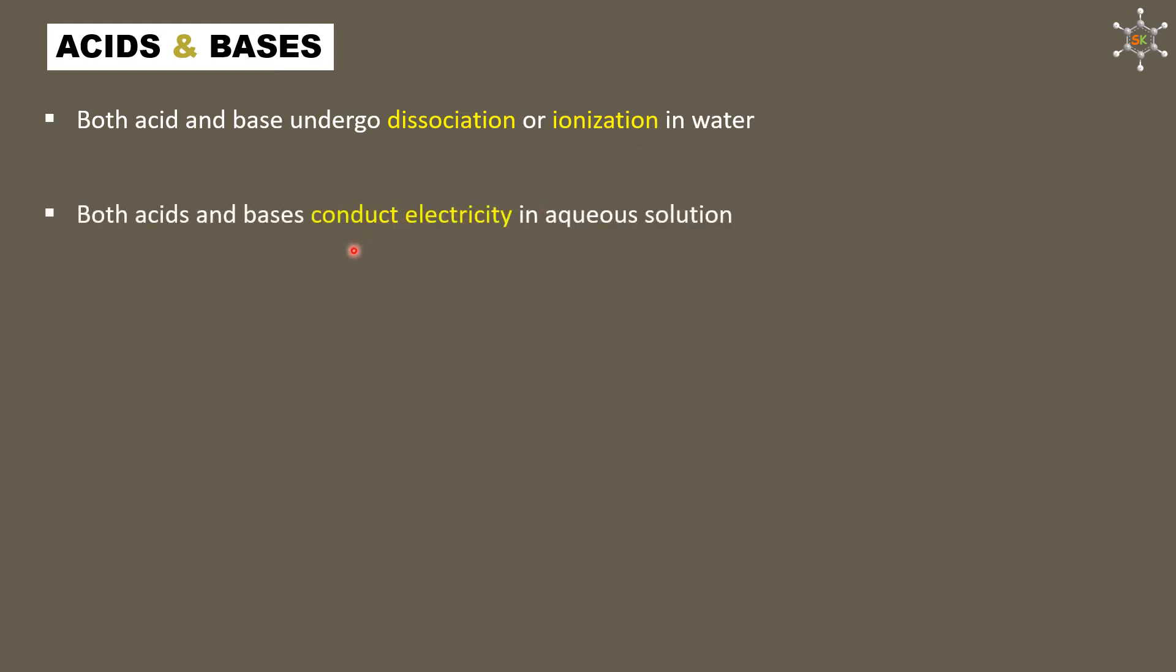Second common point: both acids and bases conduct electricity in aqueous solution. For a solution to conduct electricity, it should have ions in it. When acid or base is put into water, we know that they will undergo dissociation or ionization that results in the formation of ions. So, acidic solution and basic solution are capable of conducting electricity.